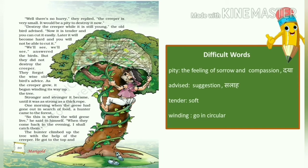But they did not destroy the creeper — लेकिन उन्होंने उस creeper को destroy नहीं किया. They forgot the wise old bird's advice. As the creeper grew, it began winding its way up the tree — जैसे वो creeper grow होता चला गया, उसने अपने आपको tree के चारों तरफ circular way में लपेटना शुरू कर दिया. Stronger and stronger it became until it was as strong as a thick rope — वो creeper strong होता चला गया, बिलकुल एक मोटी रसी की तरह मजबूत हो गया.